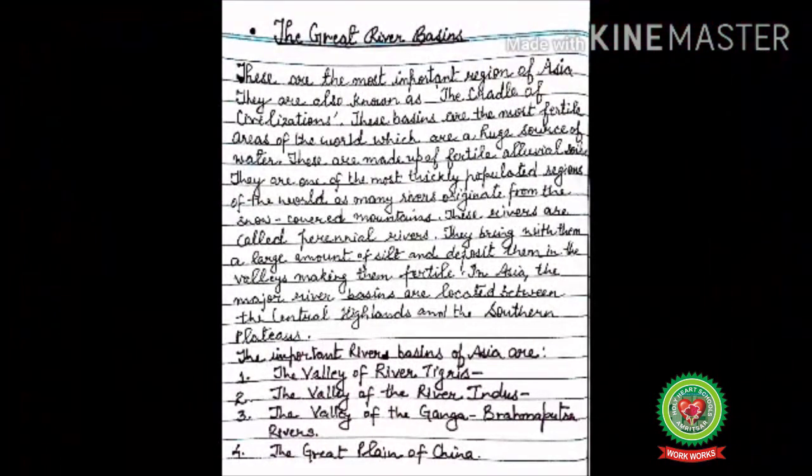Students, take out your book and open page number 68. The great river basins are the most important regions of Asia. They are also known as the cradle of civilization. These basins are the most fertile areas of the world and a huge source of water. They are made up of fertile alluvial soils and are one of the most thickly populated regions of the world. As many rivers originated from snow-covered mountains, they are called perennial rivers, bringing large amounts of silt and depositing them in the valley, making them fertile. In Asia, the major river basins are located between the central highlands and the southern plateaus.